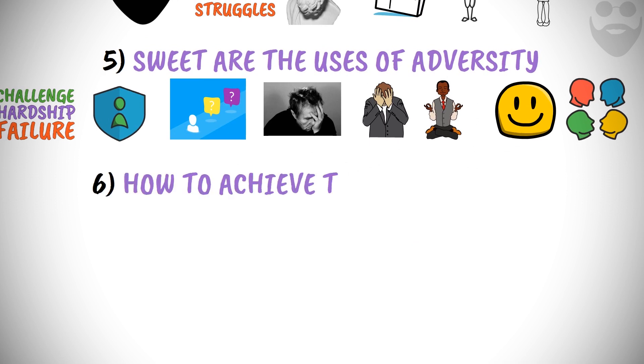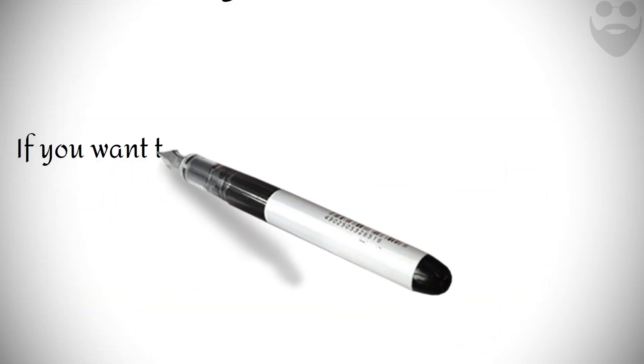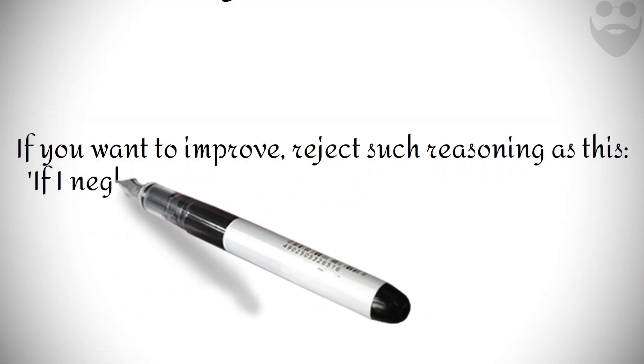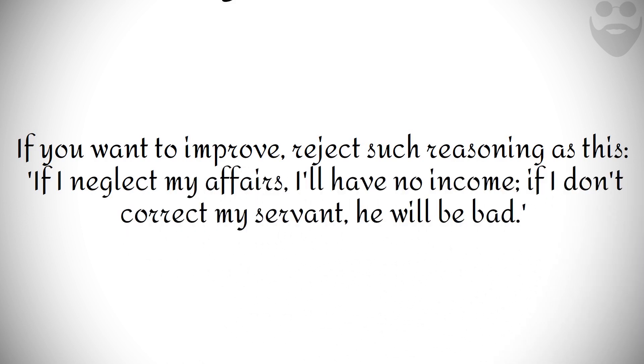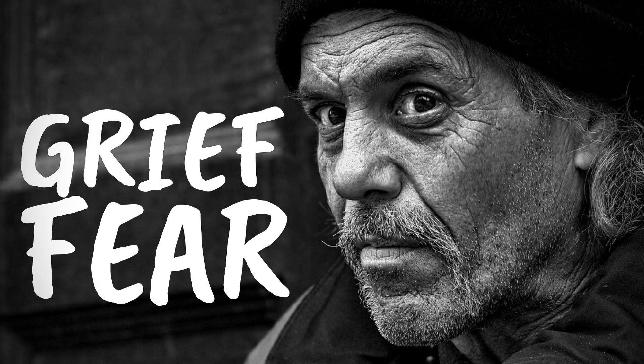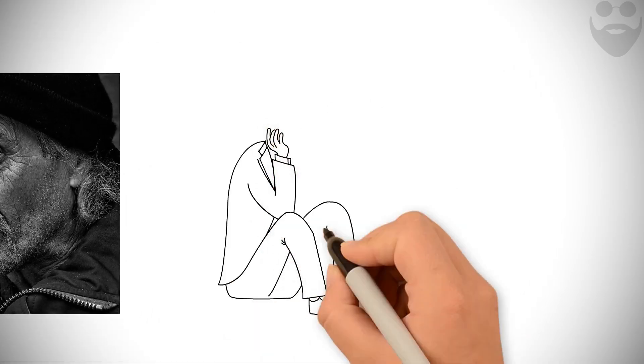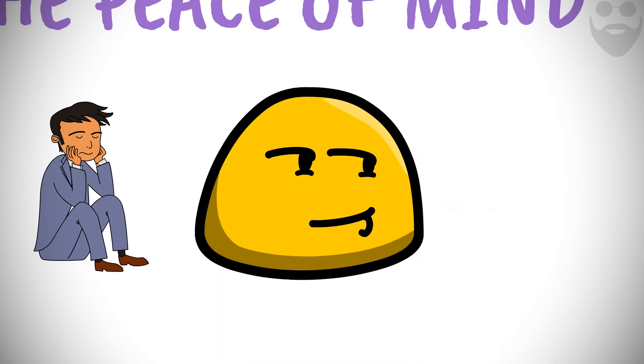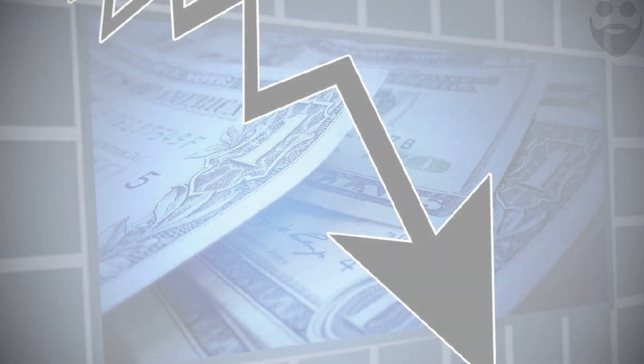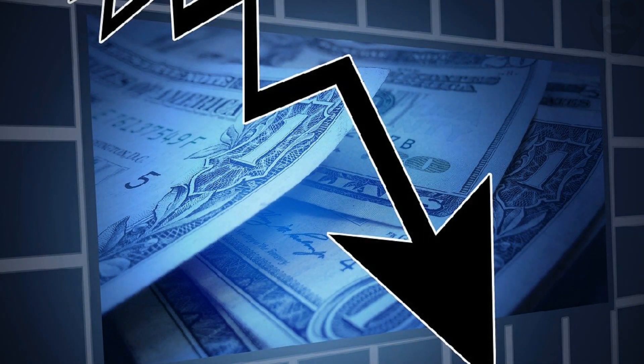6. How to achieve the peace of mind. Listen to what Epictetus says if you desire peace of mind and happiness. If you want to improve, reject such reasoning as this. If I neglect my affairs, I'll have no income. If I don't correct my servant, he will be bad. For it is better to die with hunger, exempt from grief and fear, than to live in affluence with perturbation. And it is better your servant should be bad than you unhappy. Enchiridion 12.